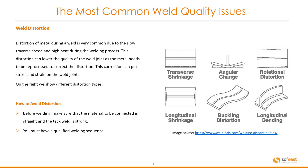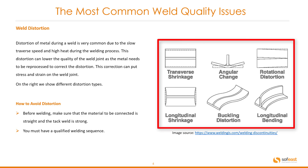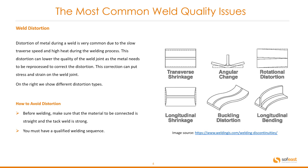Weld distortion is very common due to the slow traverse speed and high heat during the welding process. This distortion can lower the quality of the weld joint as the metal needs to be reprocessed to correct the distortion, which can put stress and strain on the weld joint. On the right we show the different distortion types. Before welding, make sure that the material to be connected is straight and the tack weld is strong, and you must have a qualified welding sequence.